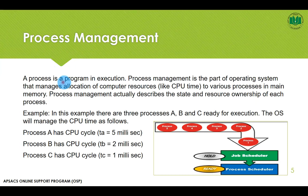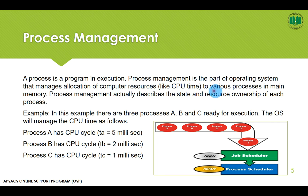A process is a program in execution. Simply put, a process is a program in running state. Process management is the part of the operating system that manages allocation of computer resources. Every process needs some resources like CPU and some amount of RAM to run. The operating system is responsible to allocate these resources to the various processes in the main memory. Process management describes the state and resource ownership of each process.